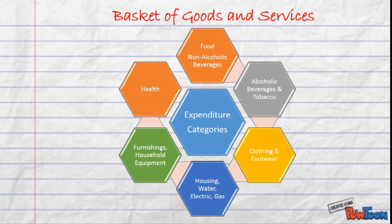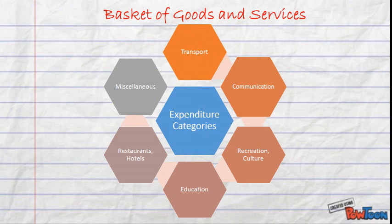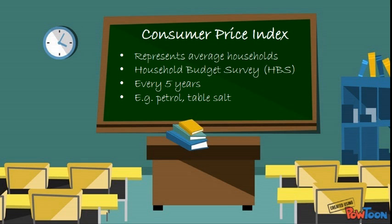This Basket of Goods and Services is divided into 12 main groups, namely: food and non-alcoholic beverages; alcoholic beverages and tobacco; clothing and footwear; housing; water; electricity; gas and other fuels; furnishings and household equipment; health; transport; communications; recreation and culture; education; restaurants and hotels; and lastly, miscellaneous items.